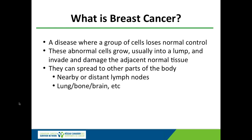Let's start at the beginning. What is breast cancer? It's a disease where a group of cells loses its normal control. These abnormal cells grow, usually into a lump, but not always, and they can invade and damage the adjacent normal tissue. They can also spread to other parts of the body, like lymph nodes, lung, brain, bone, and liver.